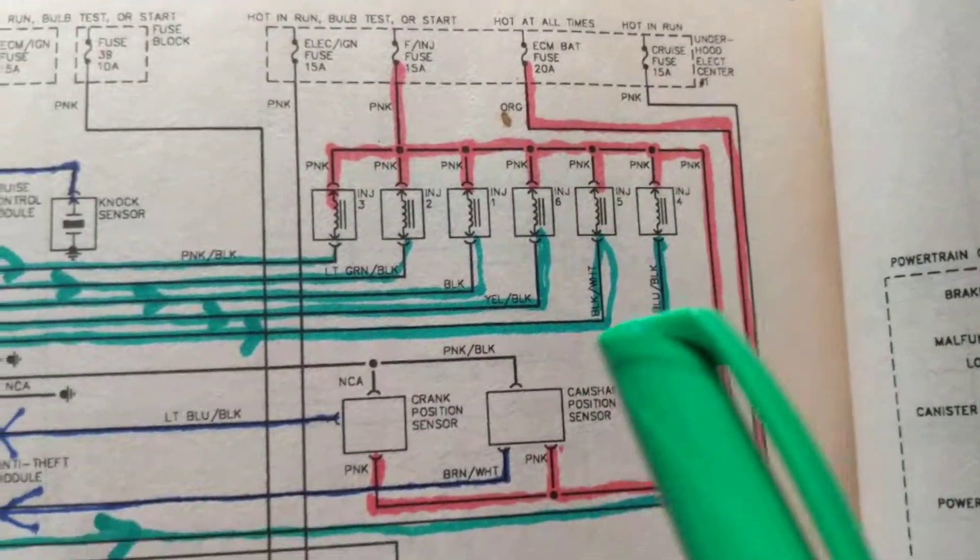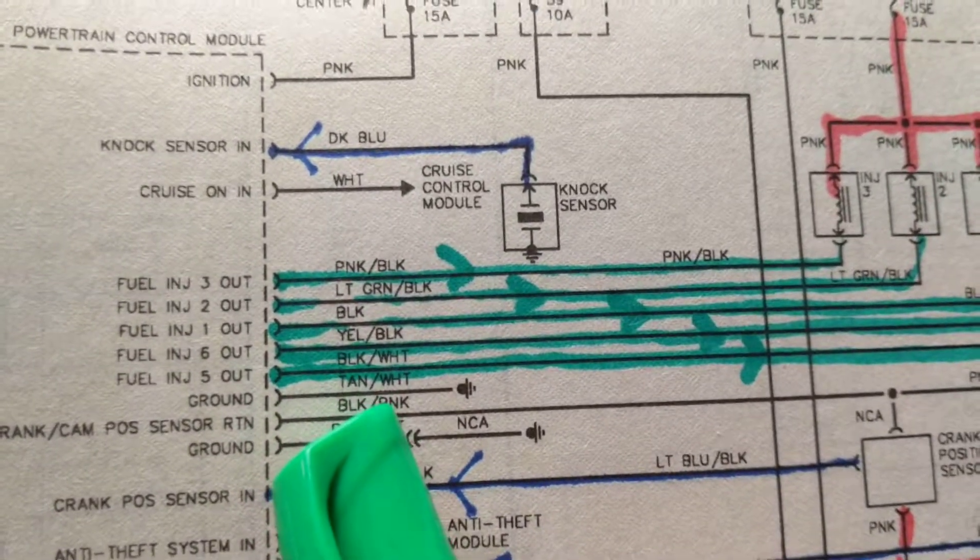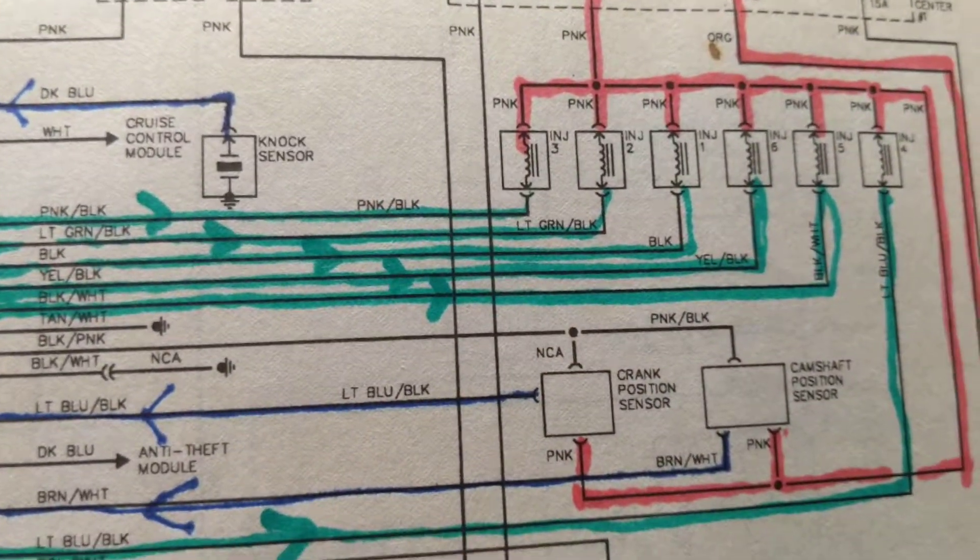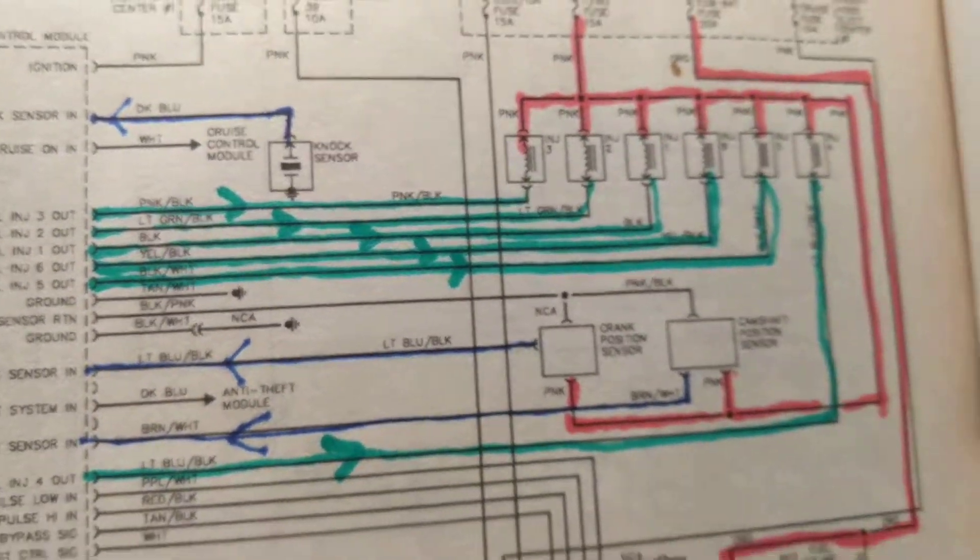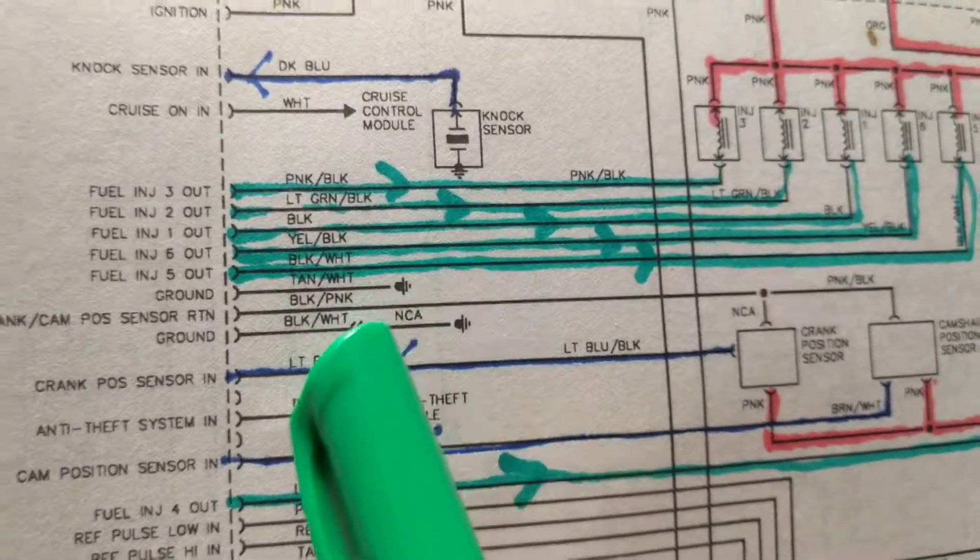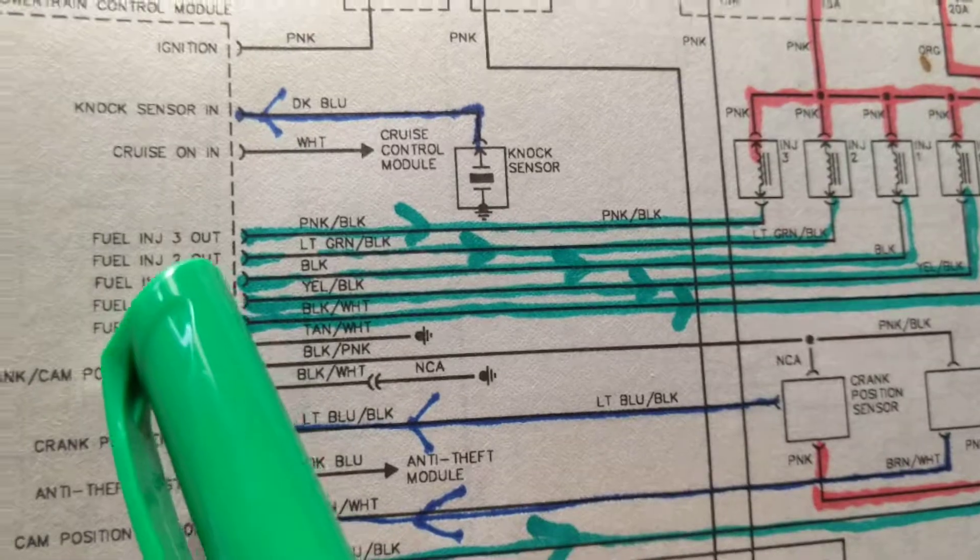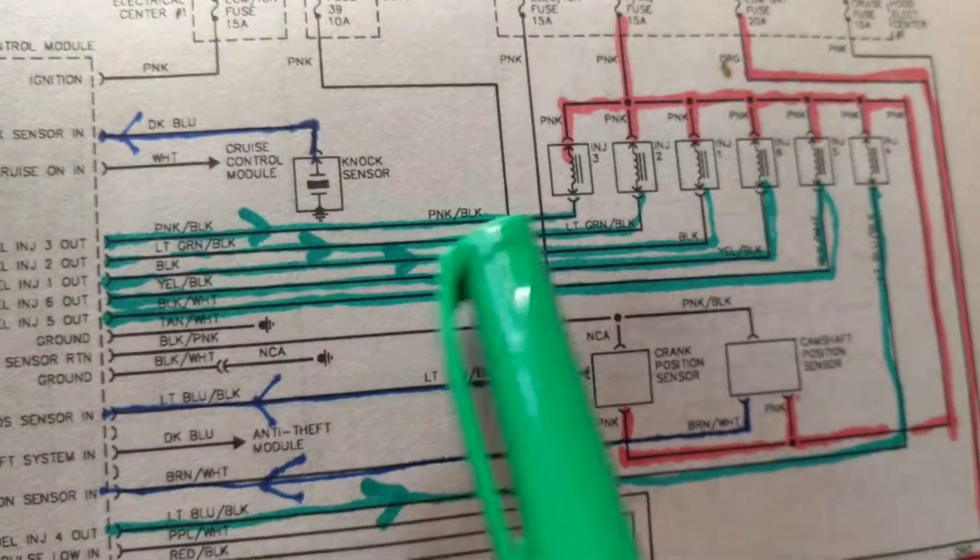Therefore the outputs, as we just mentioned, will be the fuel injectors. How much fuel? How much should you open the fuel injector to allow more fuel or less fuel, dependent upon air and oxygen sensors, how much oxygen is in exhaust? Therefore it tells you over here 'out' - that means it's an output. It's controlling something.